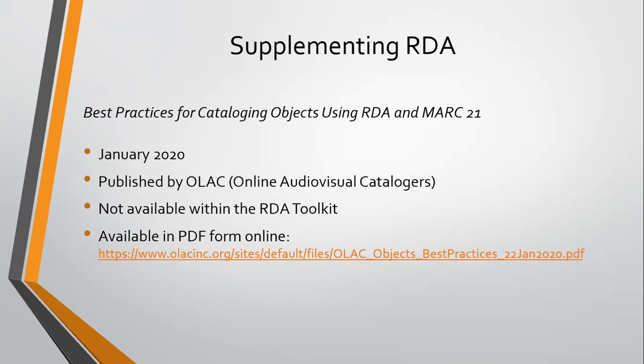This document is linked on the slide. It's available for free on OLAC's site as a PDF. Unlike the PCC and Library of Congress policy statements for RDA, it's not integrated into the toolkit, but it is available in PDF form at that link. It was recently updated in January of 2020. OLAC, of course, stands for Online Audiovisual Catalogers, but they deal with many different types of material besides AV ones.